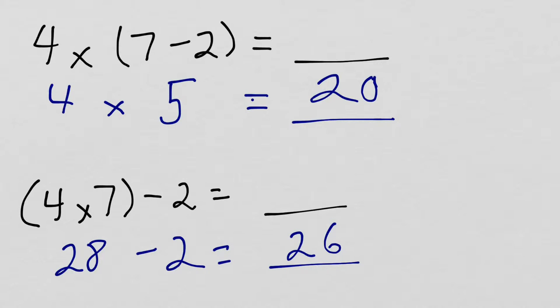Pretty straightforward example where we see that sometimes the placement of the parentheses totally changes the problem. It's the same numbers, the same operations - 4 times 7 minus 2 - but where I placed the parentheses totally changes the answer. The main thing to remember is whatever is in parentheses, you do first.